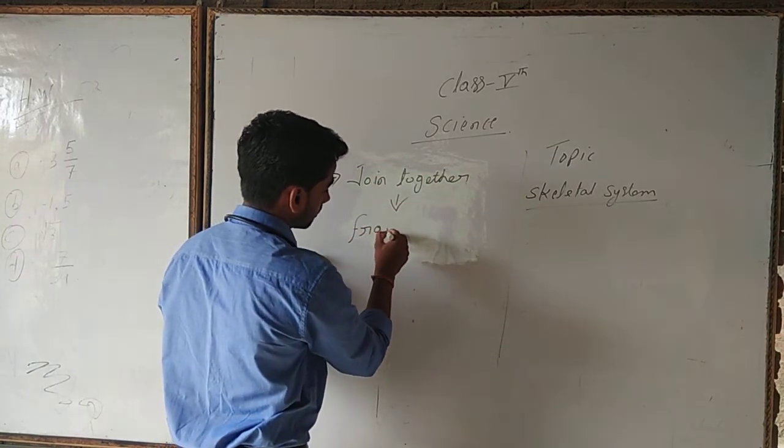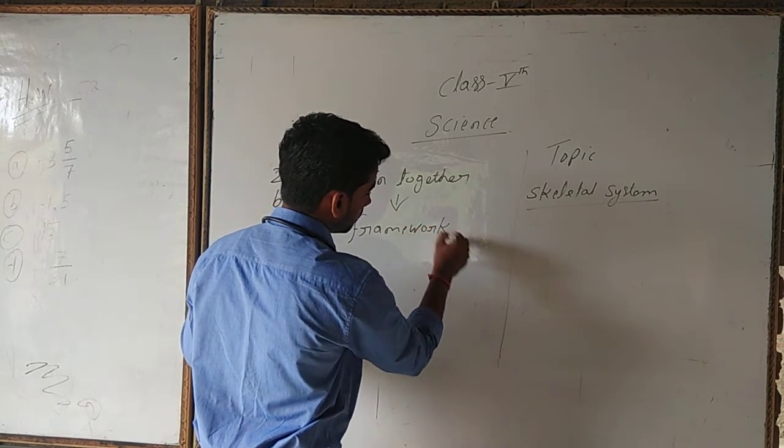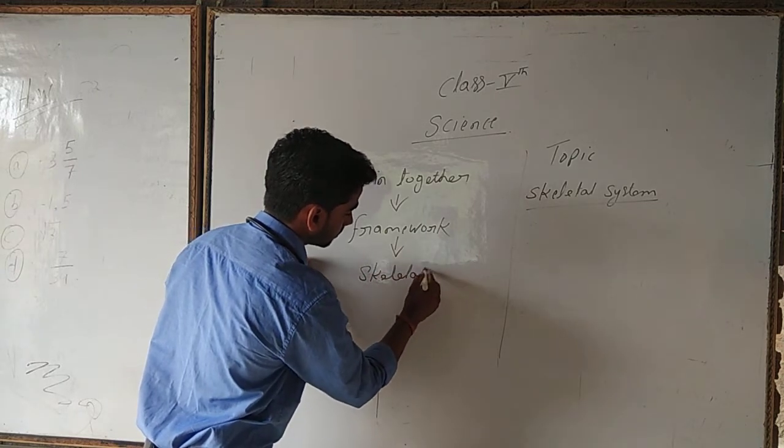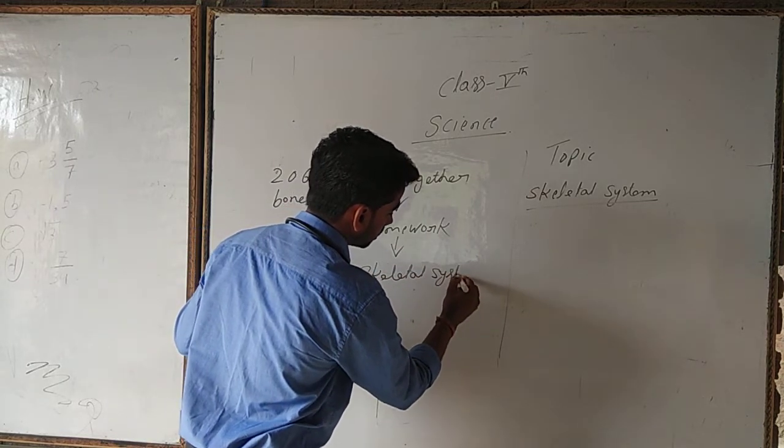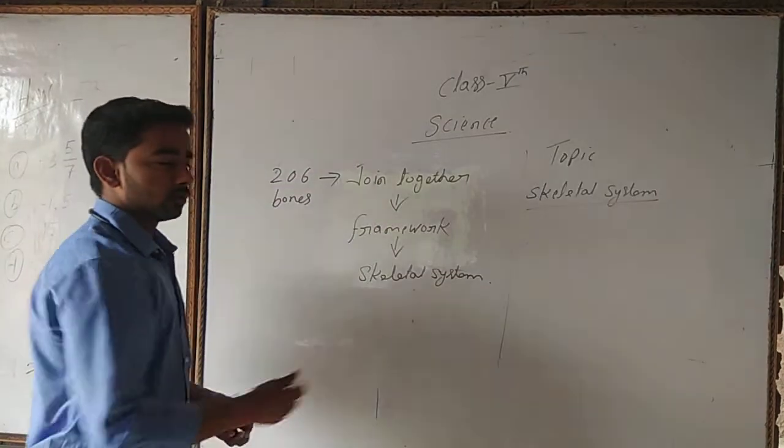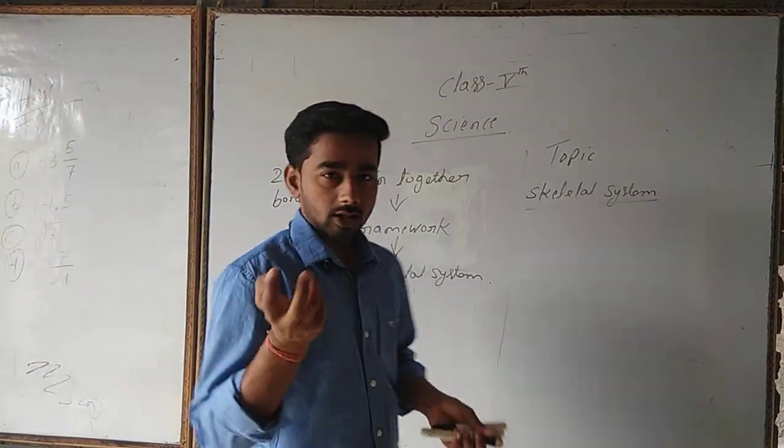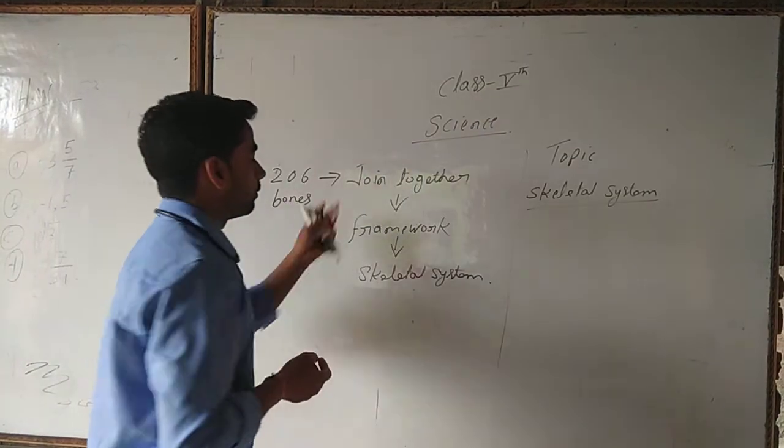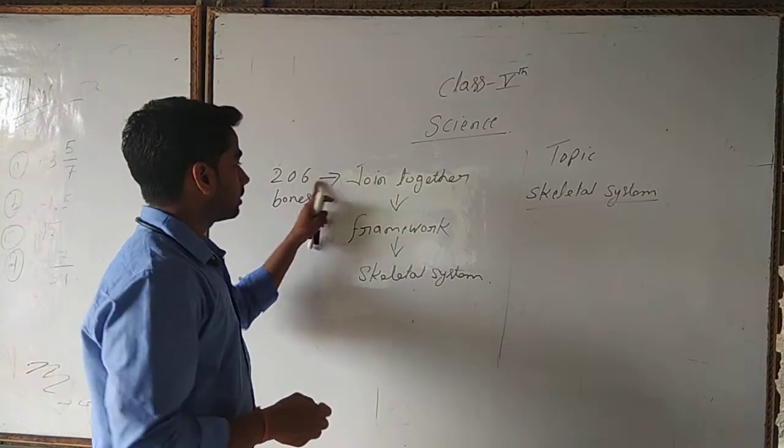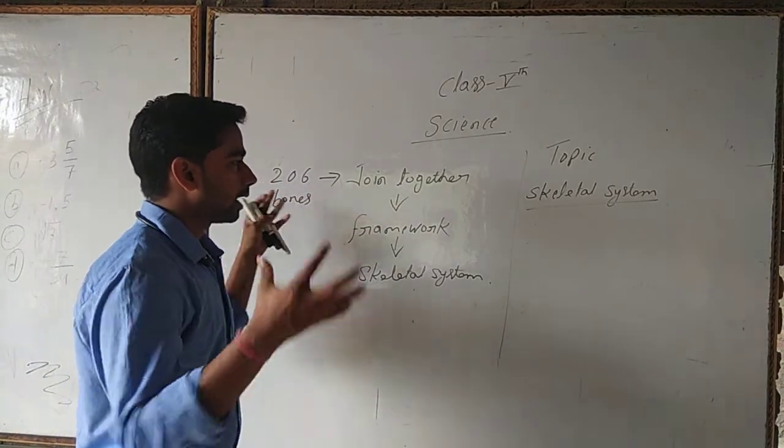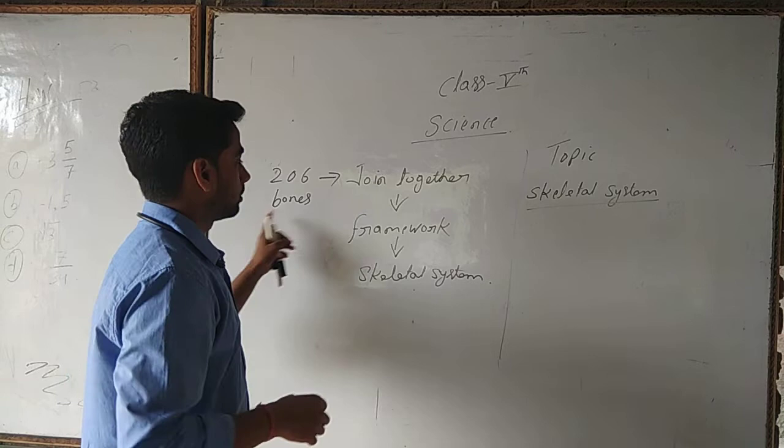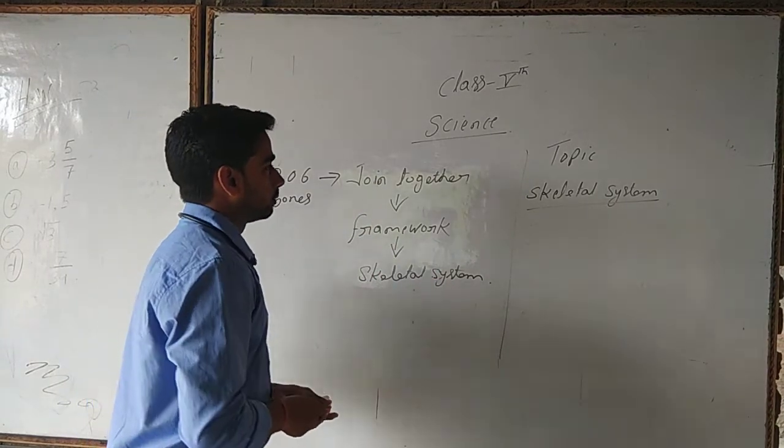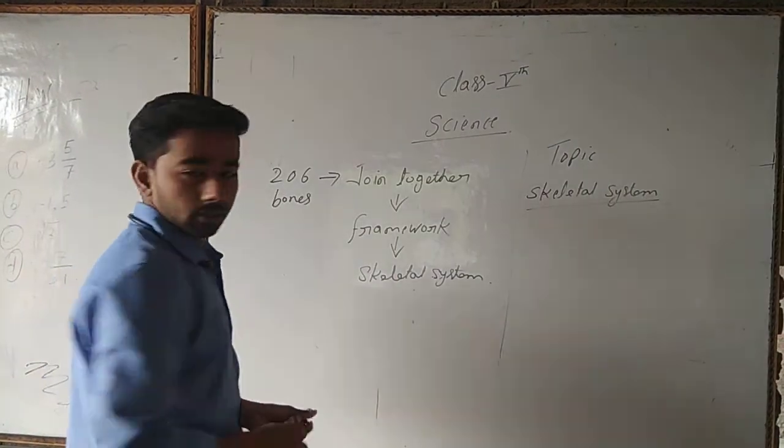These 206 bones are joined together and they form a framework which we call the skeletal system. Just like the circulatory system and respiratory system in our body, we have a skeletal system where all 206 bones join and are held together.